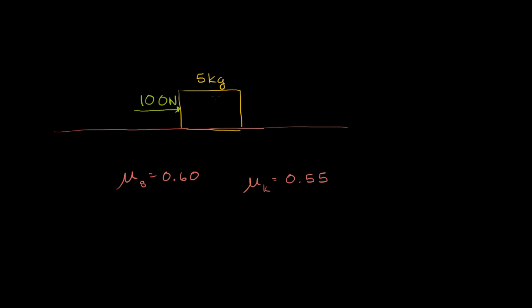I've got a block of wood with a mass of 5 kilograms sitting on some dirt, near the surface of the Earth. The coefficient of static friction between this type of wood and this type of dirt is 0.60, and the coefficient of kinetic friction is 0.55. These values were measured or found in a reference. Let's say we push on this side of the block with a force of 100 Newtons.